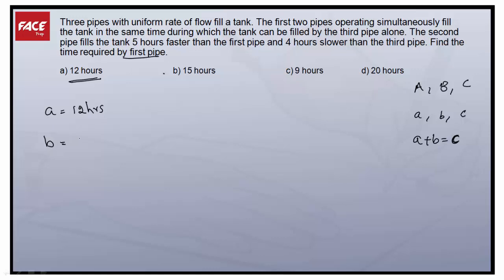What about the third pipe? The second pipe fills the tank five hours faster than the first pipe and four hours slower than the third pipe, so the third pipe will be 3 hours.